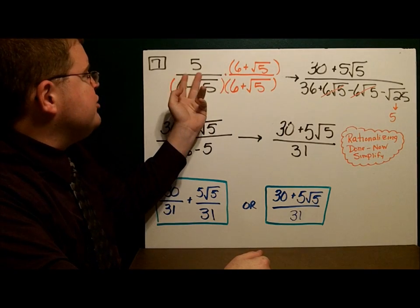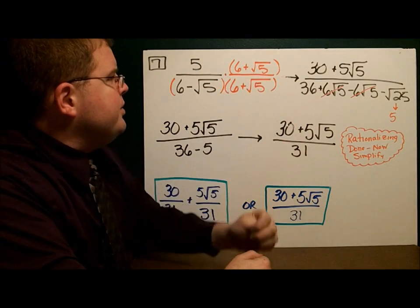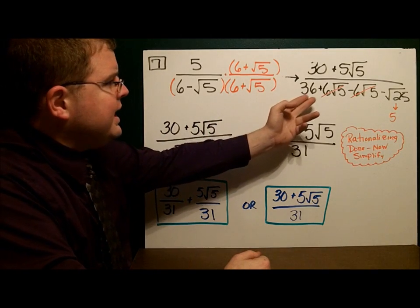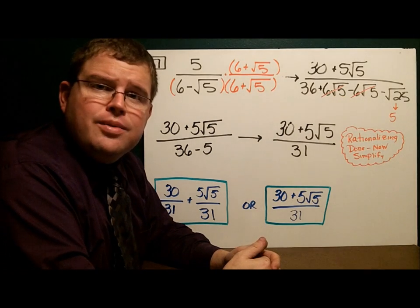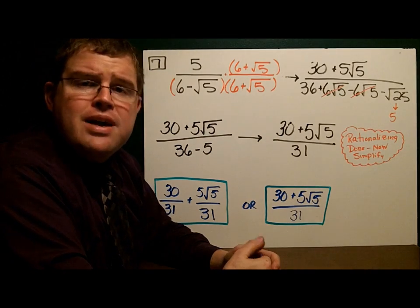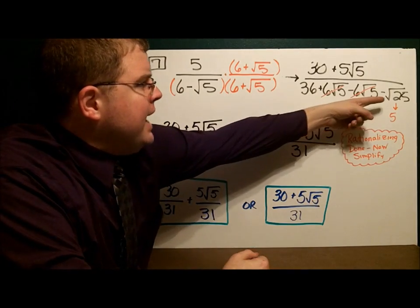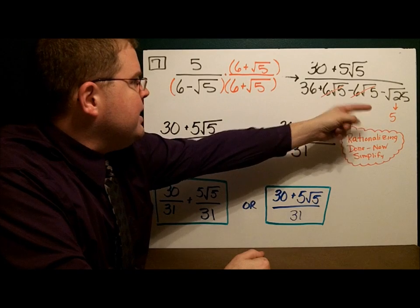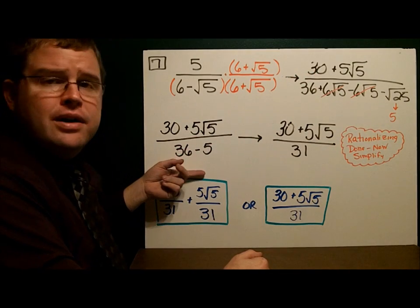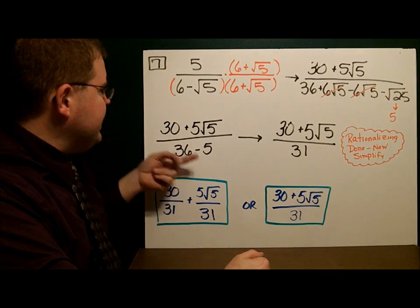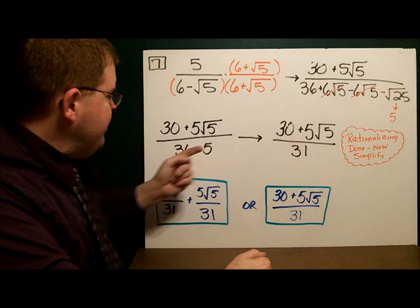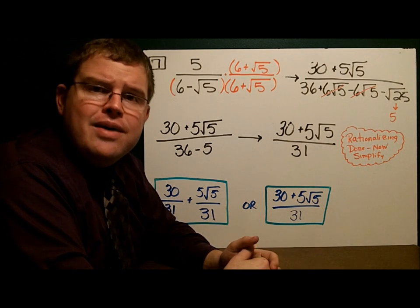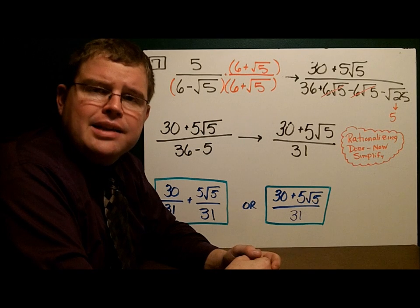Up top, I'll distribute: 6 times 5 is 30, plus 5 square roots of 5. On the bottom, I double-distribute the binomials, giving me 36 plus 6 square roots of 5 minus 6 square roots of 5 minus 25. The middle terms cancel and I'm left with a perfect square. So the denominator is 36 minus 5, and the numerator is 30 plus 5 square roots of 5. The rationalizing is done — I now have a rational number in my denominator, exactly what I wanted.